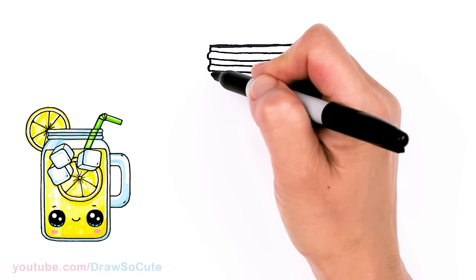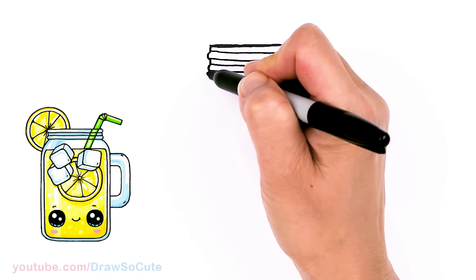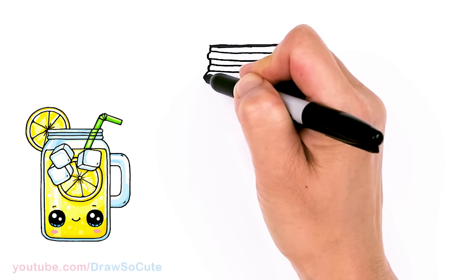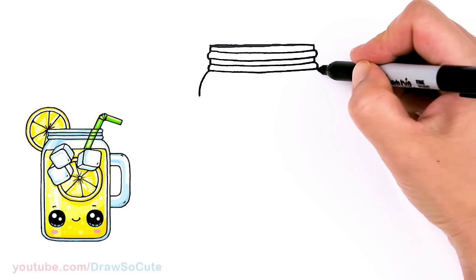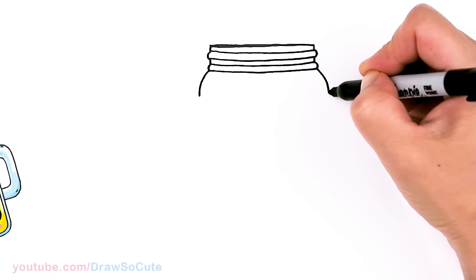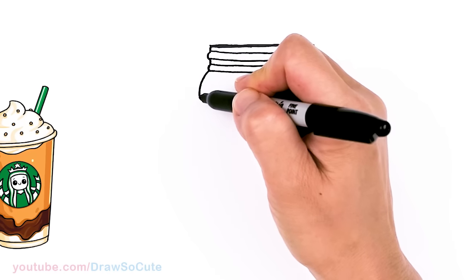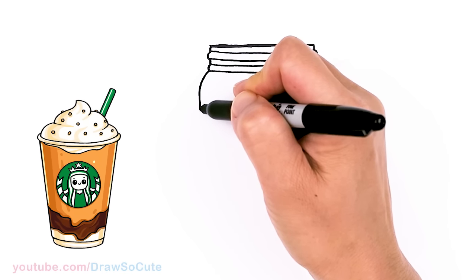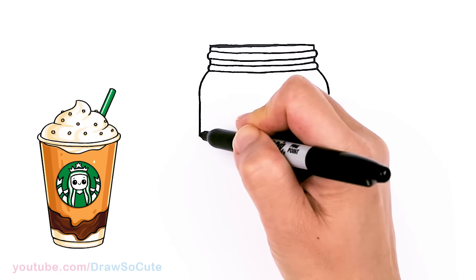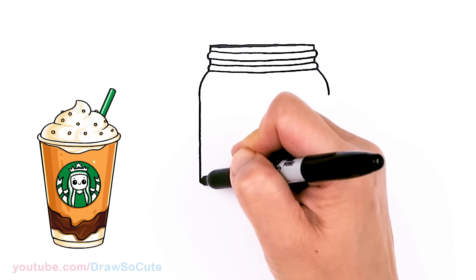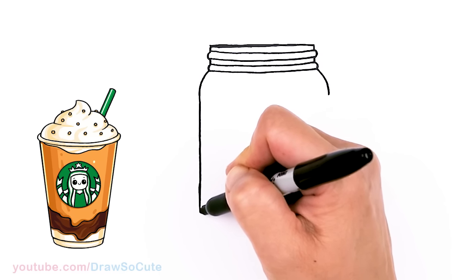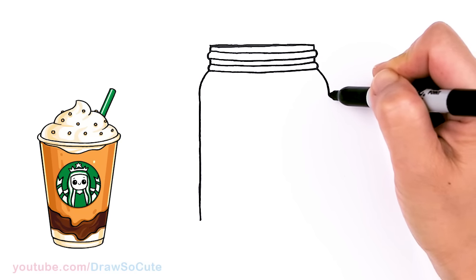So then now from there we can start the jar part. So let's come out right here with a curve. And same thing on the other side. From there, let's bring this all the way down, straight down.